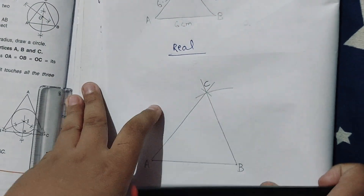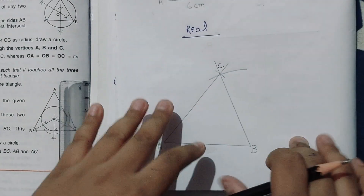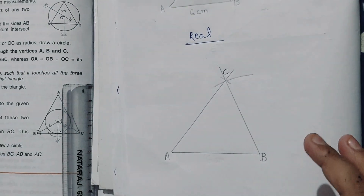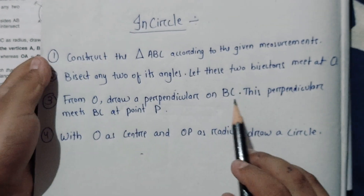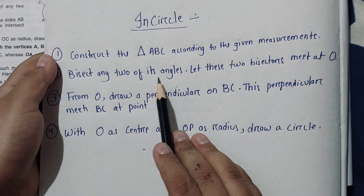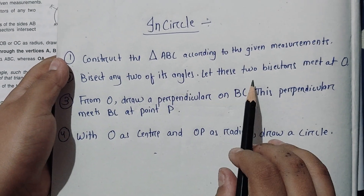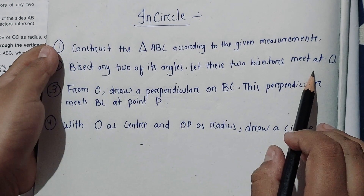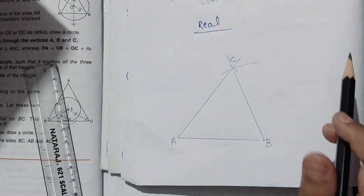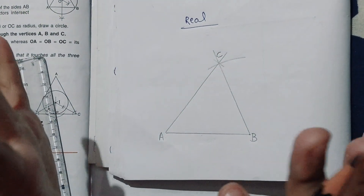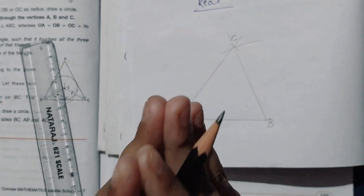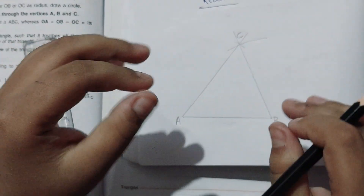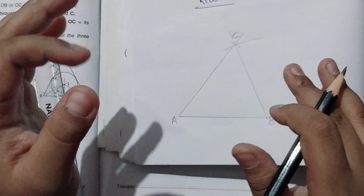Now we will draw the circle inside the triangle. The second rule is: bisect any two of the angles. The two angle bisectors must meet at point O. Note that for the circumcircle we bisected the sides, but for the incircle we bisect the angles. We take the compass and keep it on the vertex.